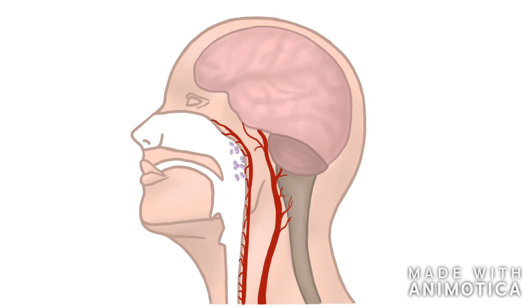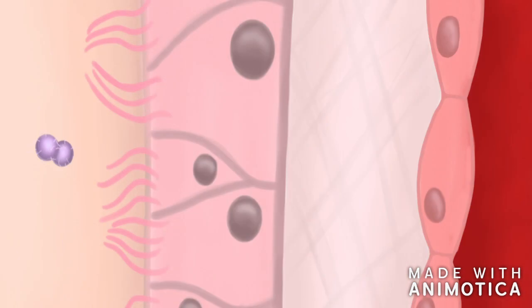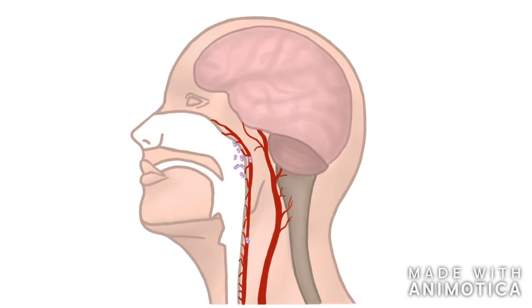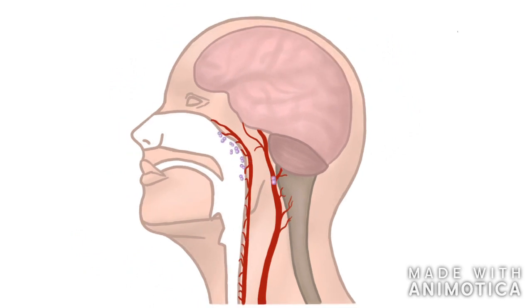Firstly, the bacteria has to cross the epithelium in the nose. Then it has to cross the vascular endothelium to come into the blood. The blood vessels shown are not anatomically correct. When the bacteria is in the blood, it can travel through the entire body.